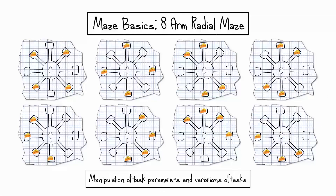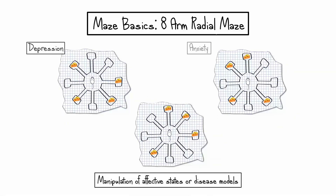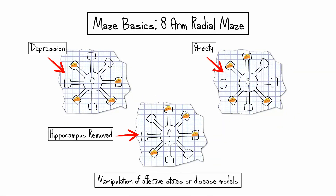By manipulating task parameters, the memory load can be increased and decreased, which is important because often memory impairments are subtle and may require certain conditions to manifest. Using both types of tasks and variations of them is important because deficits in working memory and reference memory can be disassociated. By manipulating the affective states of the animals or using rodent models of diseases, researchers can use the 8-arm radial maze to study interactions between reference and working memory and other brain networks.